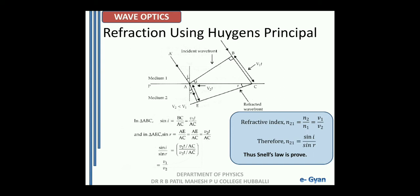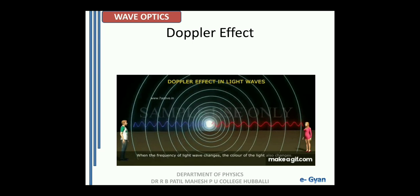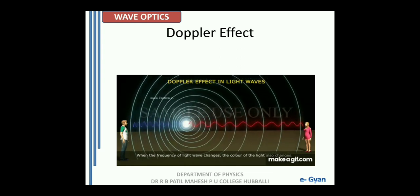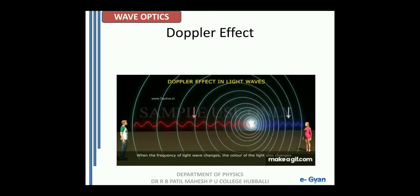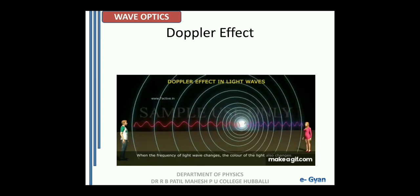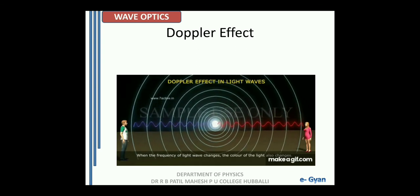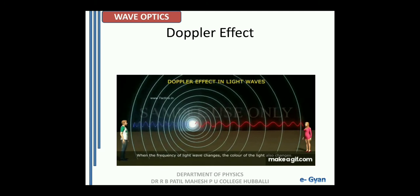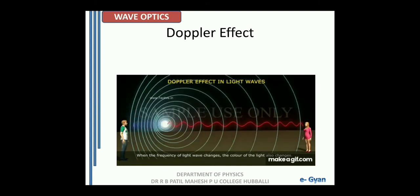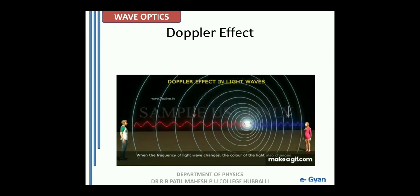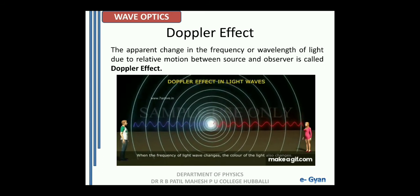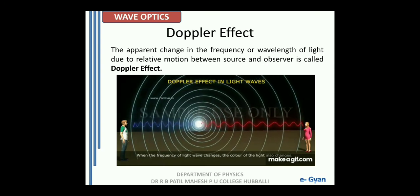Now, after reflection and refraction phenomena, let us try to understand one more concept — Doppler's effect. We have studied the Doppler's effect in the chapter Waves in class 11th. In the diagram we have two persons, a boy and a girl, and there is a source of light which tends to travel away from the boy and towards the girl. Due to this, the apparent wavelength is changing for both. For the boy, the apparent wavelength is increasing, and for the girl, the apparent wavelength is decreasing. The apparent change in the frequency or the wavelength of light due to the relative motion between the source and the observer is called Doppler's effect.